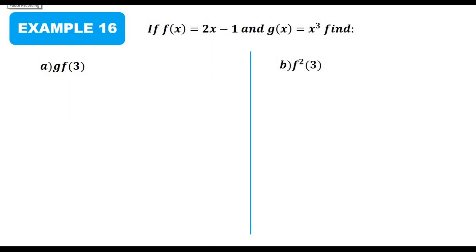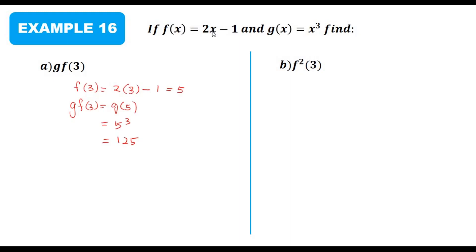Now let's try Example 16. Given f(x) = 2x − 1 and g(x) = x³, find g(f(3)). First find f(3): substitute 3 into f(x) to get 2(3) − 1 = 5. Then g(f(3)) = g(5): substitute 5 into g(x) to get 5³ = 125.